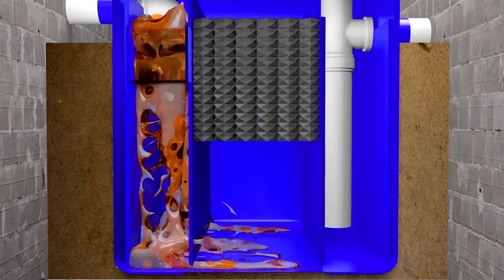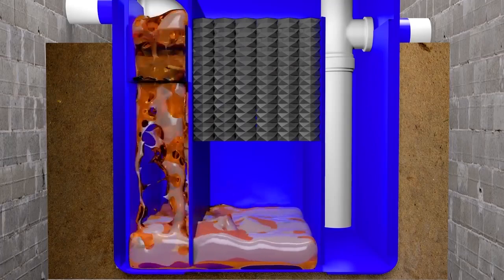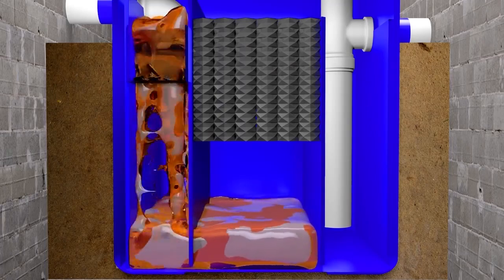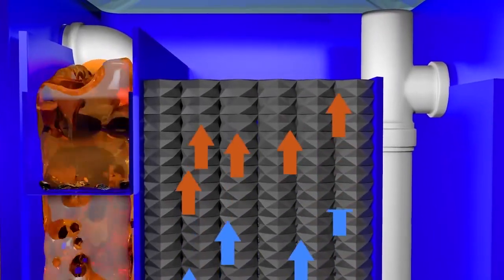The water and oil are directed to the second stage, where they pass through the coalescing element, which, due to its specific shape and inclination, accelerates the process by up to 72 times.